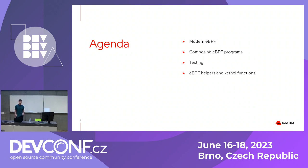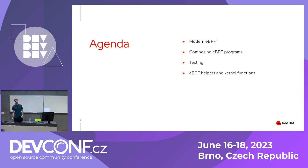The third thing I want to show is testing — with growing complexity in applications, how do we test them and make sure they do what they're supposed to do? And the last one is eBPF helpers and kernel functions, basically the APIs you can use from your program, and I want to show you how you can navigate that space to know what functions and APIs are available.